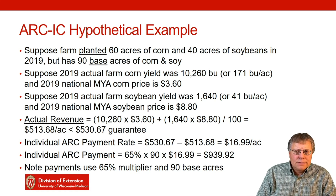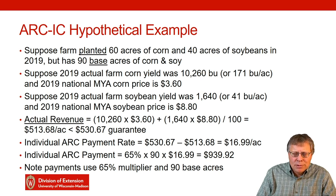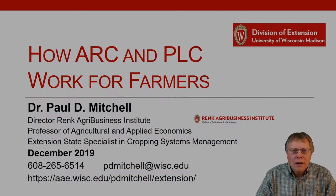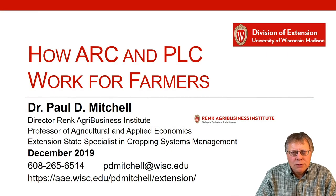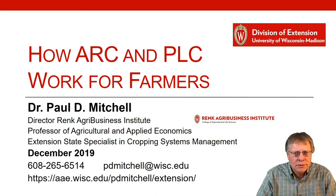It's important to emphasize that these payments use the 65% multiplier and are based on base acres. You add up corn and soybean base acres together — it doesn't matter what the split between them is. You might plant a 60-40 split between corn and soybeans, but your base acres might have a different ratio. For more information on ARC and PLC, work with your county agricultural extension agent and contact your county FSA office. They understand how all these programs work and can help you and your landowners make your decision.